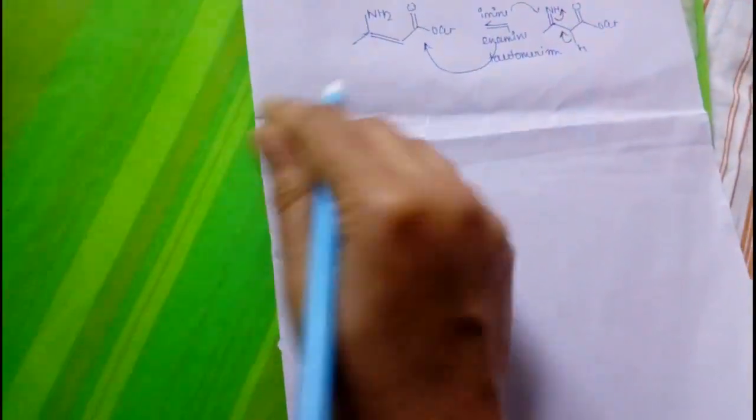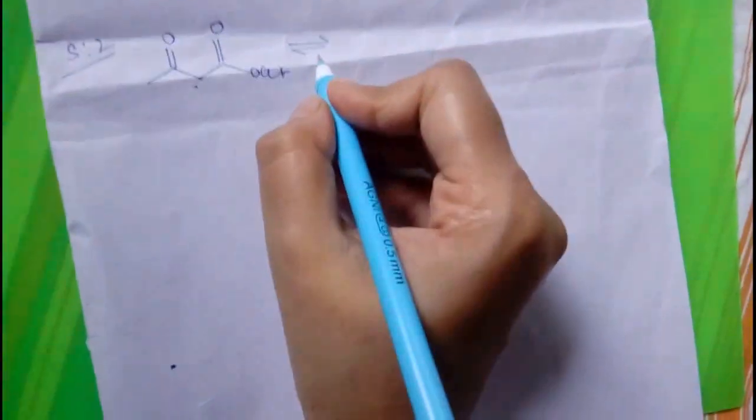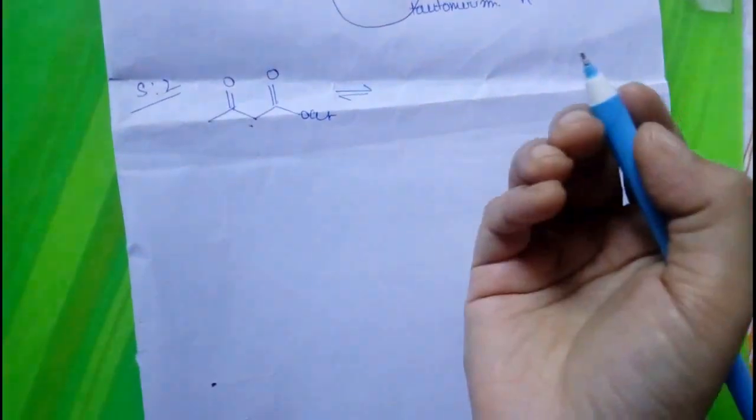In step 2, alpha-beta unsaturated ketone or alpha-beta unsaturated ester will form. At first, ethyl acetoacetate will go to its enol form.